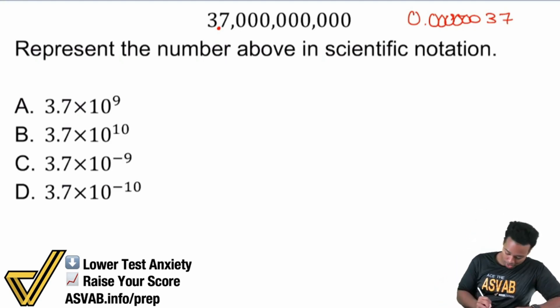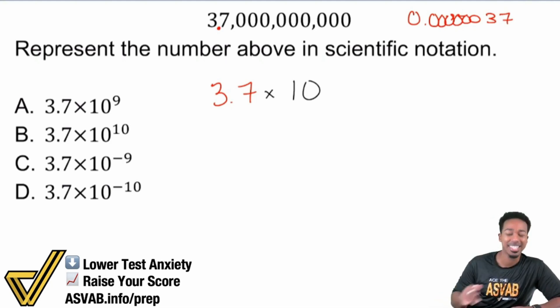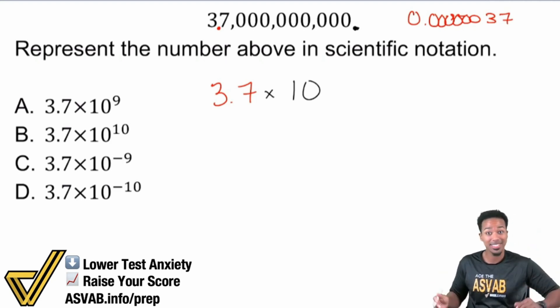And so then what we're going to do is write this. Our answer is going to be 3.7. And then we're going to multiply by 10 to a certain power. What's that power going to be? All you're going to do is count where the decimal currently is. So right here, we're just going to count the number of spaces we need to get to this. That's it.